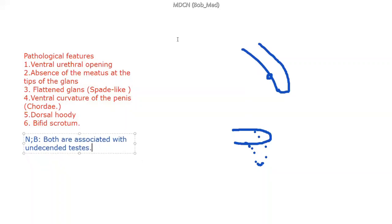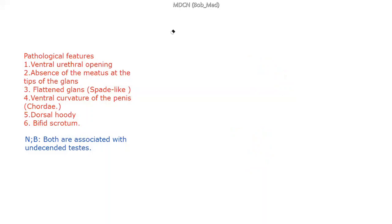The next thing is complications. You might be asked about complications in the exam. One complication is infertility — because some patients are essentially shooting blank, especially if the opening is in the perineal region. There is also increased risk of urinary tract infections and retrograde ejaculation, which contributes further to infertility.